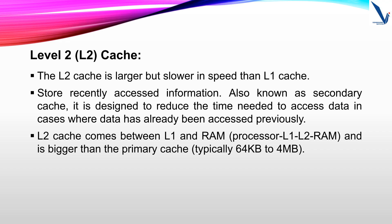To summarize, Level 2 cache is larger in size but slower in speed than Level 1 cache. It stores recently accessed information and is also known as secondary cache, designed to reduce the time needed to access data that has already been accessed previously. Level 2 cache sits between Level 1 cache and RAM — that is: processor, then Level 1, then Level 2, then RAM. Level 2 cache is bigger than primary cache, with a size of 64KB to 4MB.